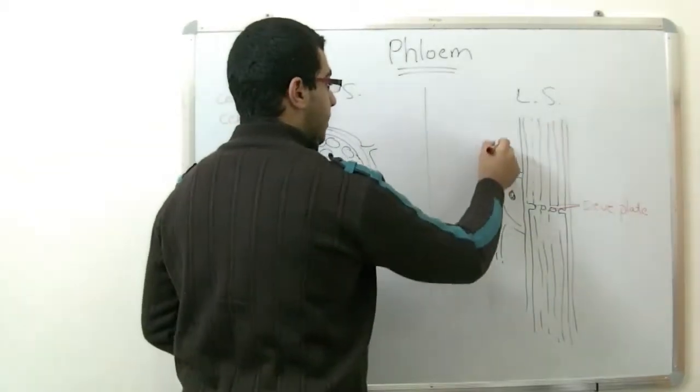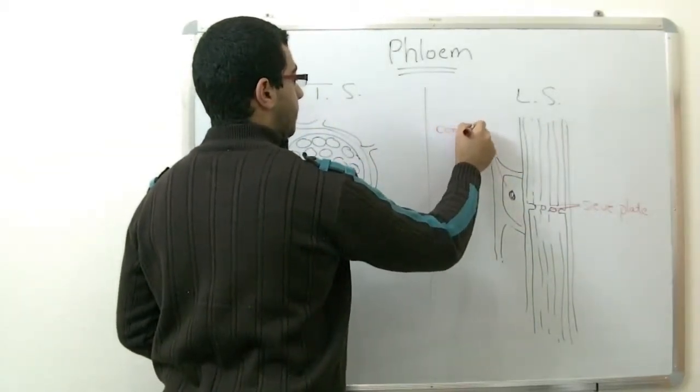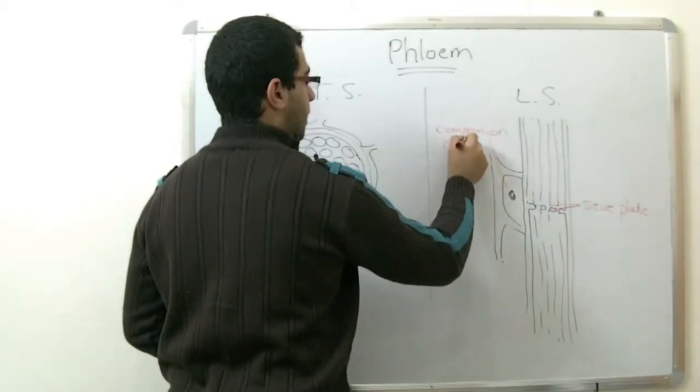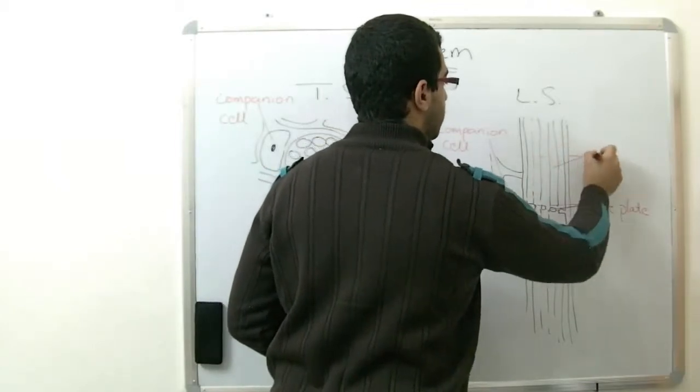This is the companion cell, and these are the sieve tubes.